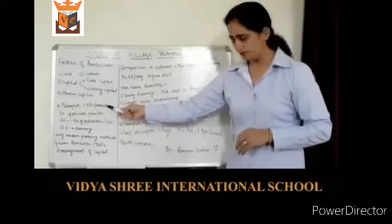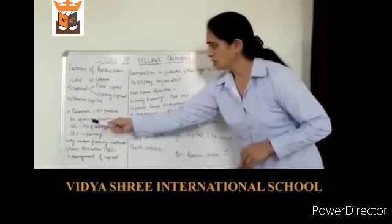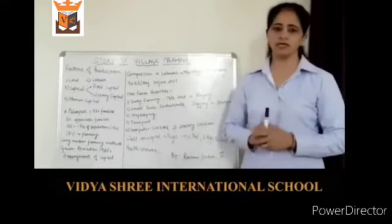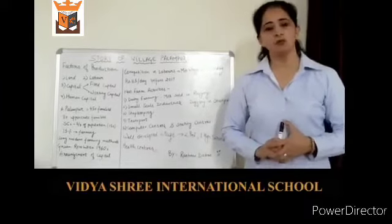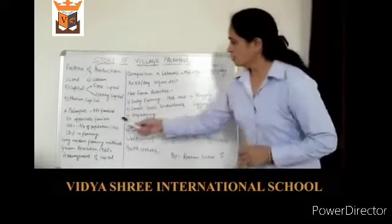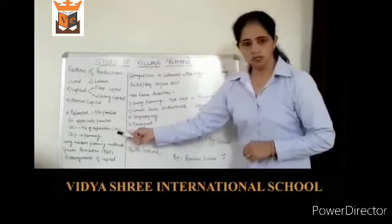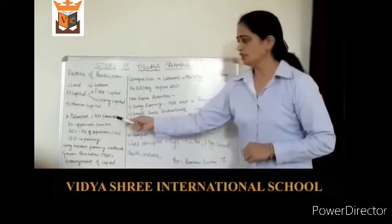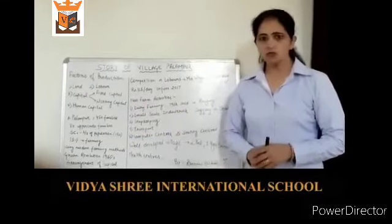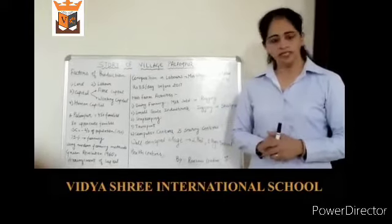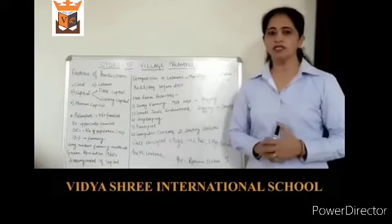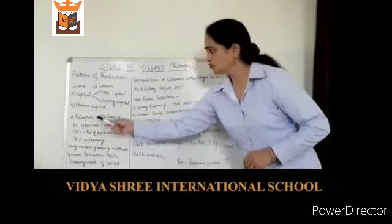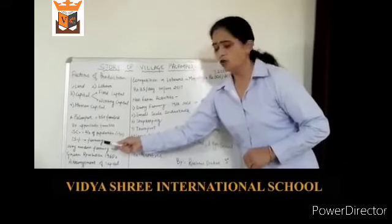Out of these 450 families, 80 families belong to the upper caste, and all these families have large farmlands on which they cultivate using modern farming methods. 150 families belong to the lower class, which is basically one third of the entire population of village Palampur. The rest of the families belong to different castes and communities and are involved in different types of activities. Basically, 75% of the population of village Palampur are involved in farming.